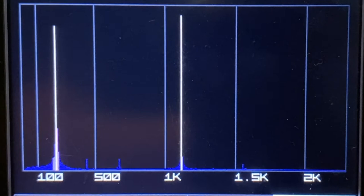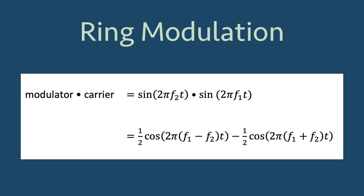If we simplify the work by making the amplitudes for each equal to 1, then when we multiply the carrier by the modulator, we get sine of 2 pi f2 t times sine of 2 pi f1 t, which is equal to 1 half cosine of 2 pi f1 minus f2 t minus 1 half cosine of 2 pi f1 plus f2 t.